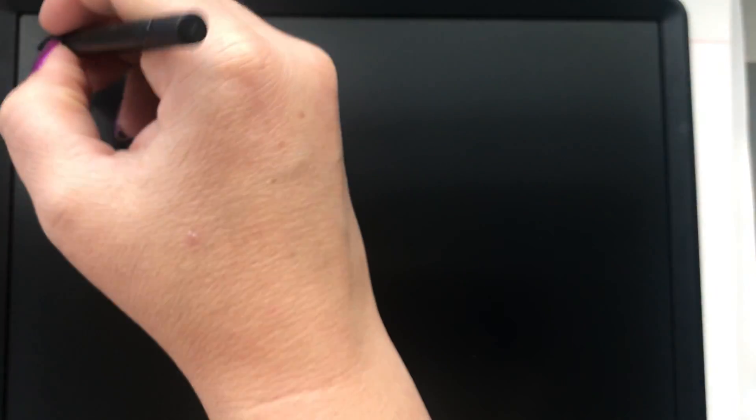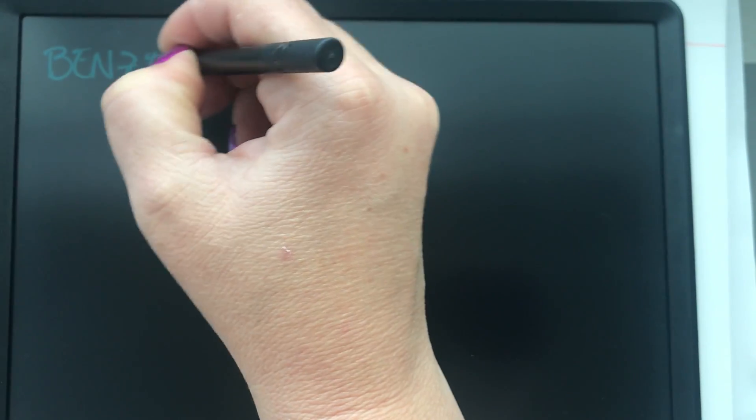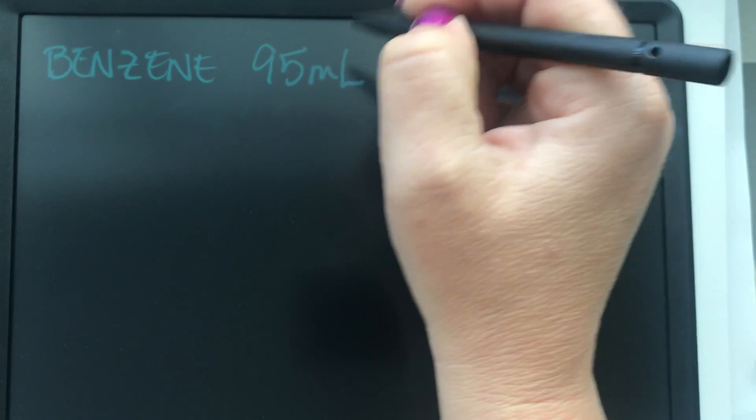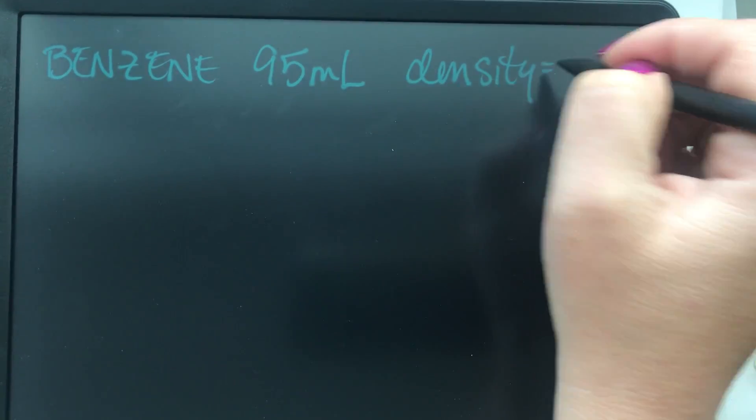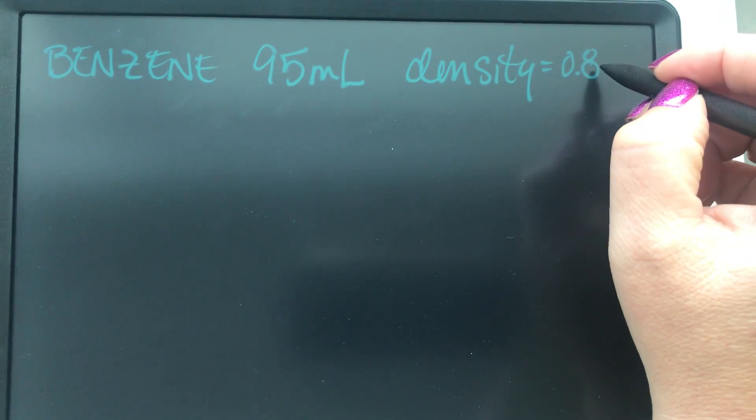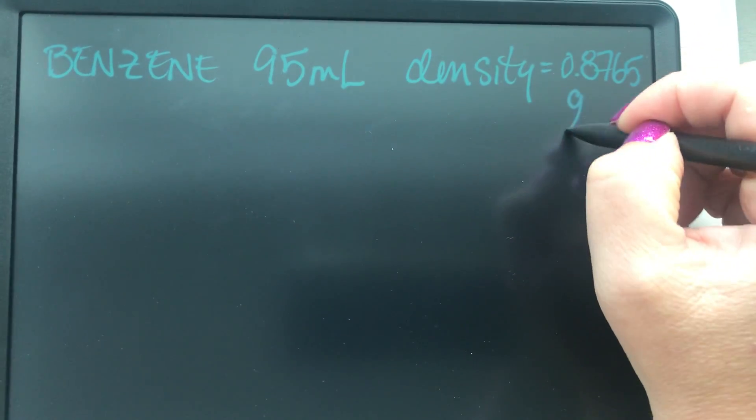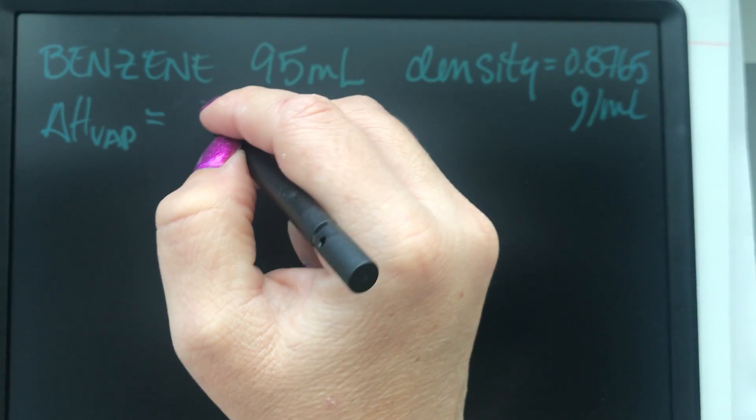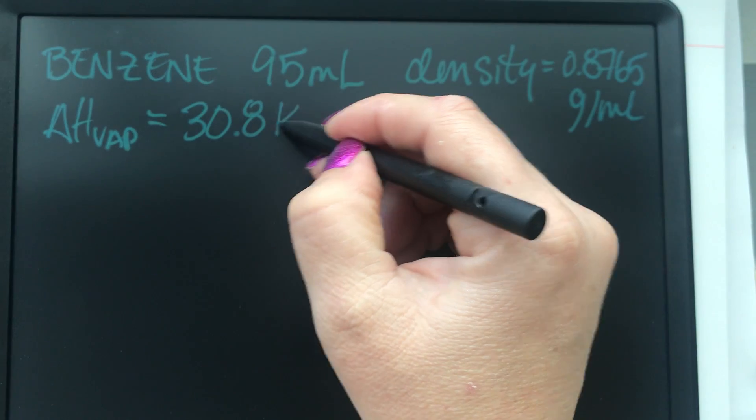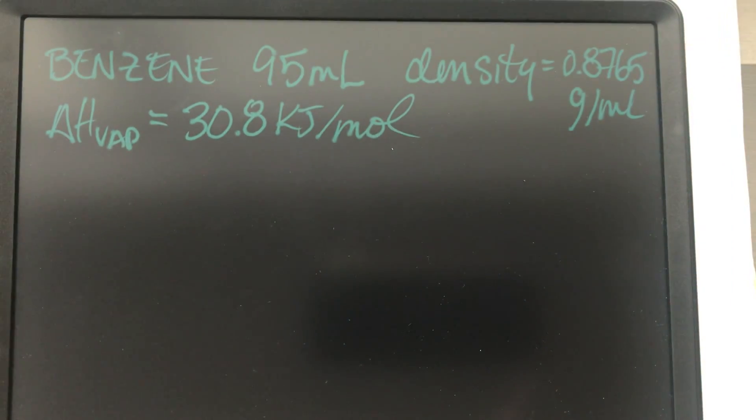Okay, so let me go back to my questions. Okay, so I have benzene and I have 95 milliliters and I have the density is given as 0.8765 grams per milliliter and I'm given the delta H of vaporization for benzene is 30.8 kilojoules per mole. Can you guys see that okay? Is it okay? Cool.